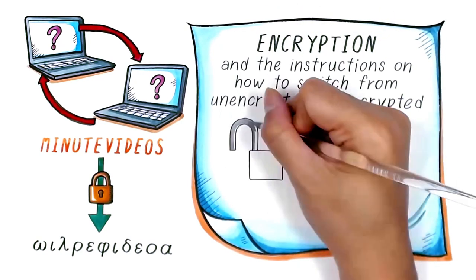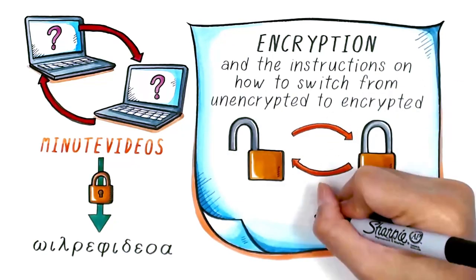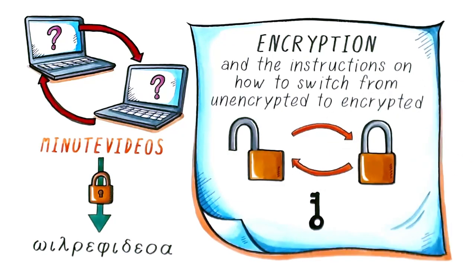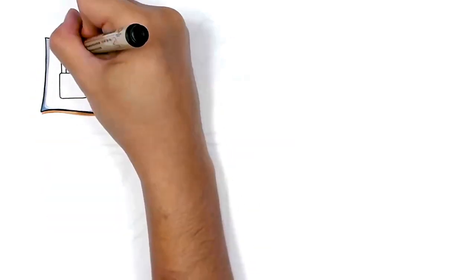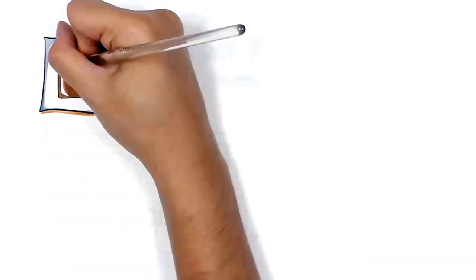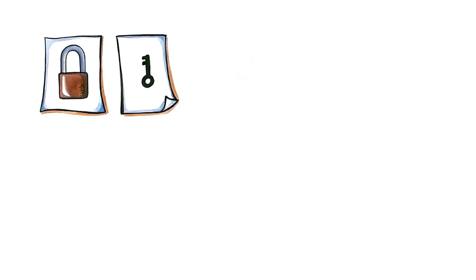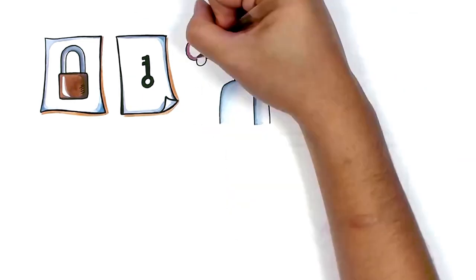The instructions on how to switch from unencrypted to encrypted text are called a key. For the recipient to be able to decrypt the message, they need to have a copy of the key. This is a complicated process to explain, so we will show you how it works using the example of paint instead of math.